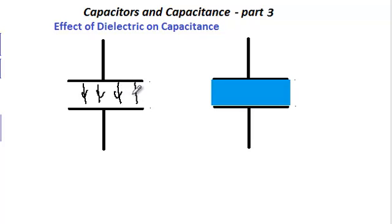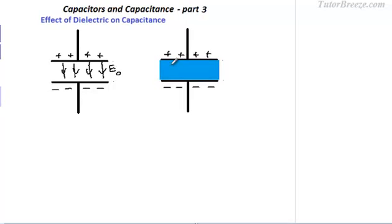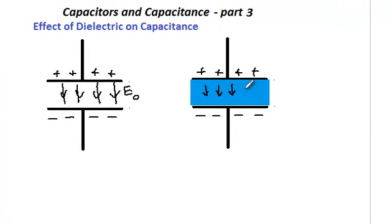Say this is the original electric field E₀. This plate has a positive charge of +Q and the other has a negative charge. On introducing the dielectric, the charge is not going to change because this capacitor is not connected to a battery. Originally the electric field was E₀, and on introducing a dielectric, the electric field reduces by a factor of the dielectric constant, so it becomes E₀/k.